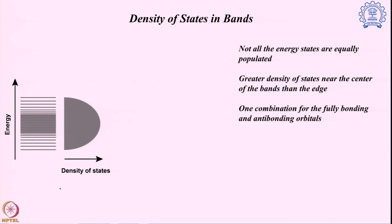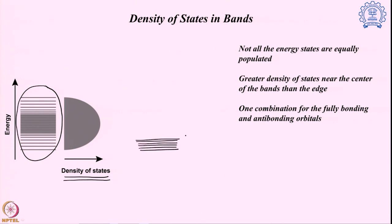In the next section we discuss how the energy bands are actually populated. We have different levels of orbitals, but are there the same number of electrons in each orbital? That is actually not true, and this is defined by the term density of states. The band structure we previously showed had very equispaced molecular orbitals, but in reality they are not always equispaced — they are not equally distributed. At the middle of the band they are quite highly populated, whereas on the edge they are sparsely populated.